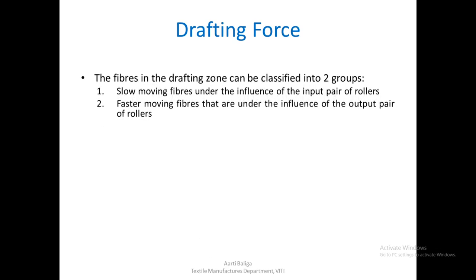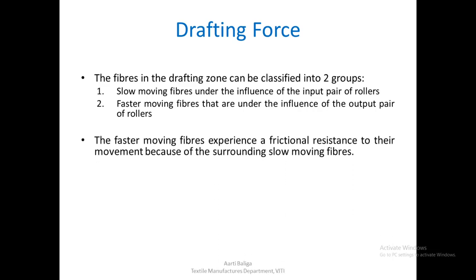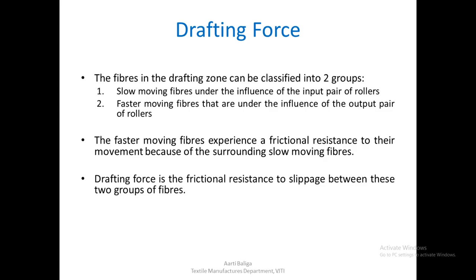Drafting force arises because in any drafting zone there are two types — or rather two groups — of fibers. One group is the slower moving fibers under the influence of the input pair of rollers, and the other is the faster moving fibers under the influence of the output pair. The faster moving fibers always experience a frictional resistance to their movement because their tail ends are surrounded by slower moving fibers, which try to hold them back. So drafting force is actually a frictional resistance to slippage between these two groups of fibers.